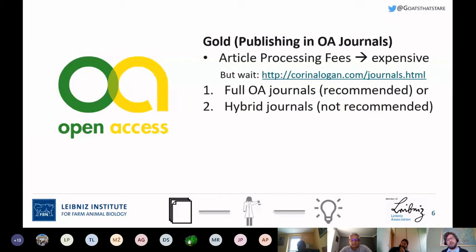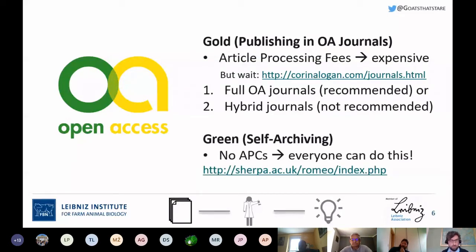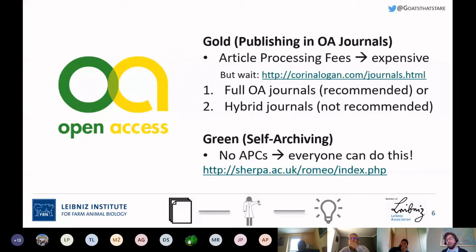My personal recommendation would be not to publish open access in hybrid journals, but that's everyone's own choice. A second way, which may not be as prominent as gold open access, is the green way — self-archiving your publications. This does not require any article processing fees, so basically everyone can do it. This applies not only to current publications but also to papers published five years ago where you didn't have money for gold open access — you can make those available via the green route as well.